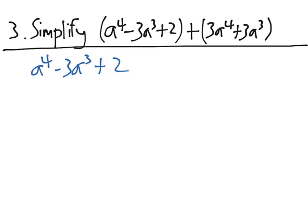then if we write the second one below it, the 3a to the 4th will align with a to the 4th, and the 3a cubed will align with minus 3a cubed.